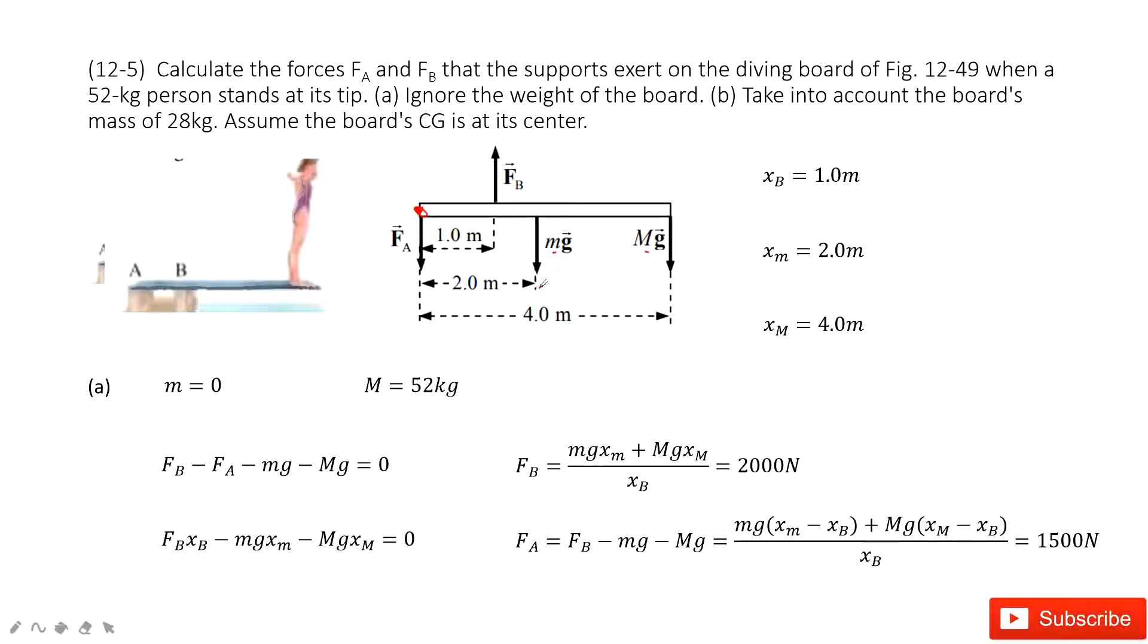So first, if we want to keep it balanced, we need to make sure the net force is zero. So FB up minus FA minus Mg minus capital Mg equal to zero.